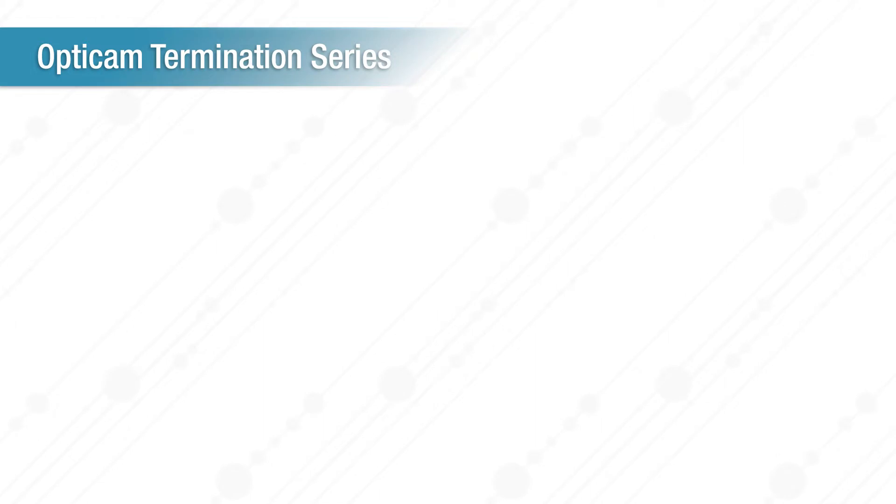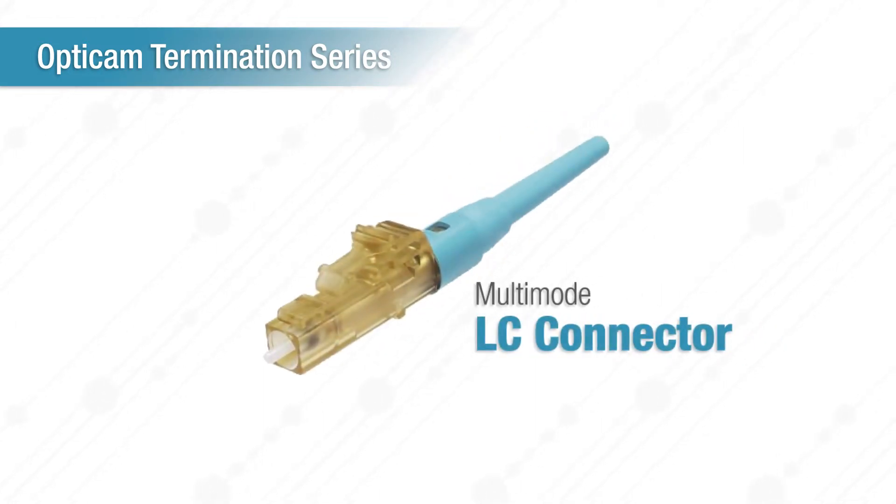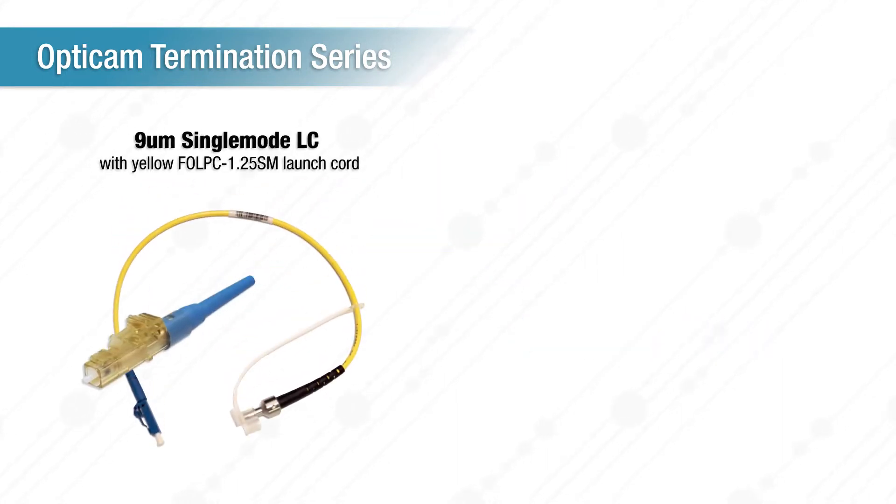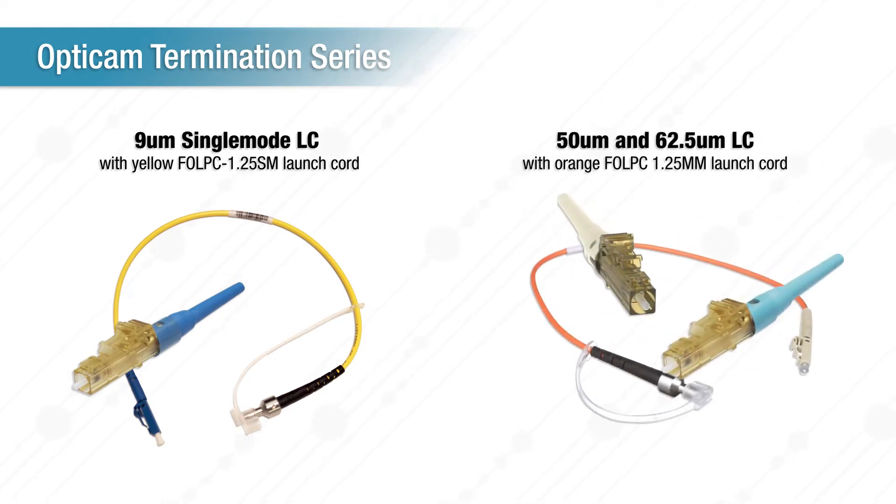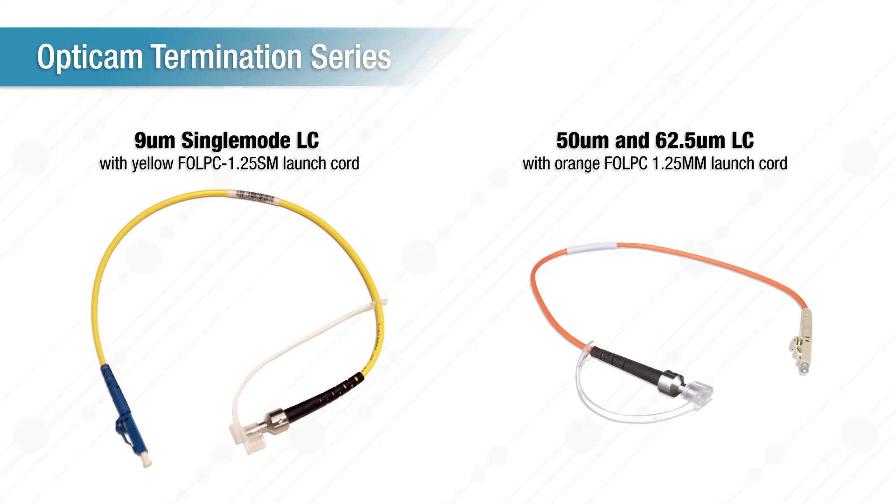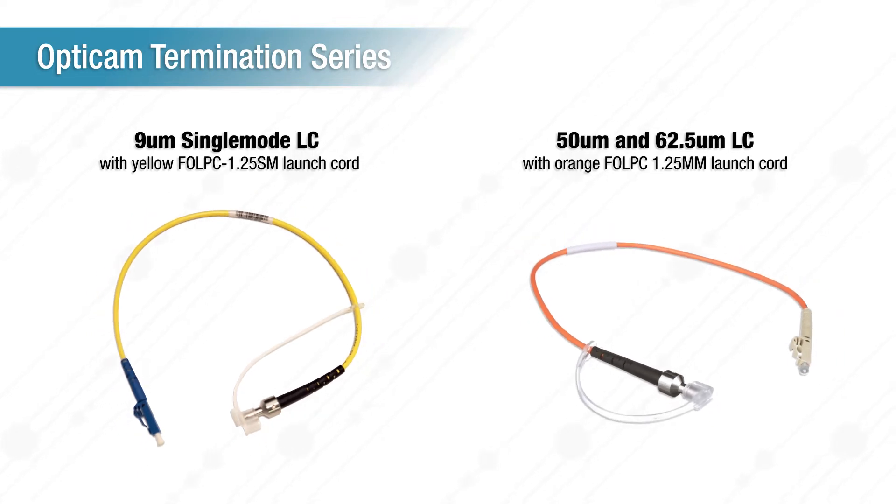This video will demonstrate the process for terminating a 50-micron multi-mode LC connector onto 900-micron tight-buffered cable. The steps for doing either a 9-micron single-mode LC or a 62.5-micron multi-mode LC are the same, with the exception of the launch cord needed and the settings on the tool.